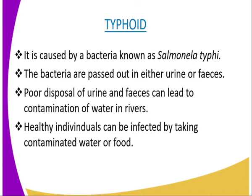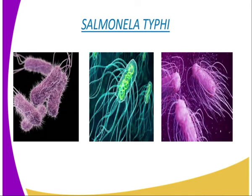The next bacterial disease we are going to look at is typhoid. Typhoid is caused by a bacterium known as Salmonella typhi, shown on our screen. The bacteria are passed out in either urine or feces. Poor disposal of urine and feces may cause contamination of the water supply from rivers, dams, and lakes. Healthy individuals can be infected by taking contaminated water or food. The bacteria can also be present in sweat and saliva, so the clothes and beddings of patients can be sources of infection to others.